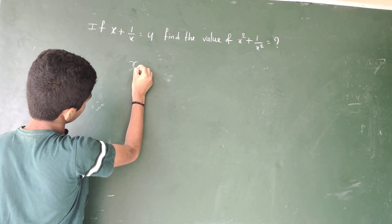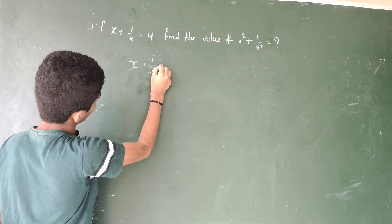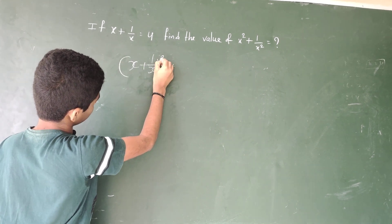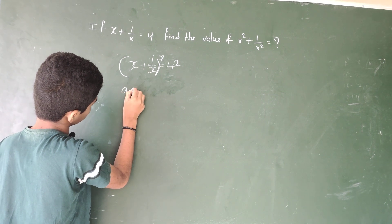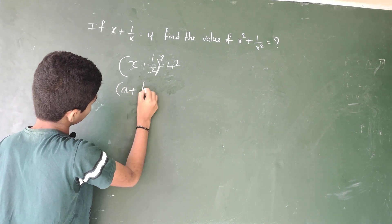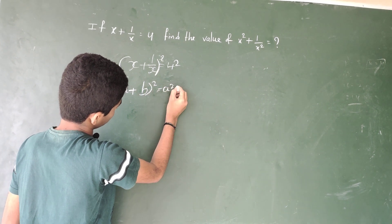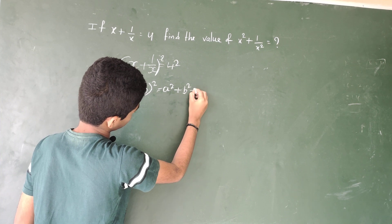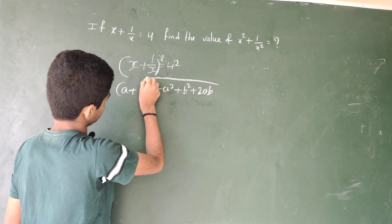First we have x plus 1 by x equal to 4. We have squaring on both sides. This is the a plus b whole square formula. A plus b whole square is a square plus b square plus 2ab. We use this formula.